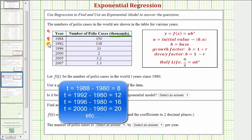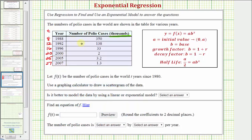We'd use t equals 12 for the year 1992, 16 for 1996, 20 for the year 2000, 25 for the year 2005, and 27 for the year 2007. The number of polio cases would be f(t), or the outputs of our function.